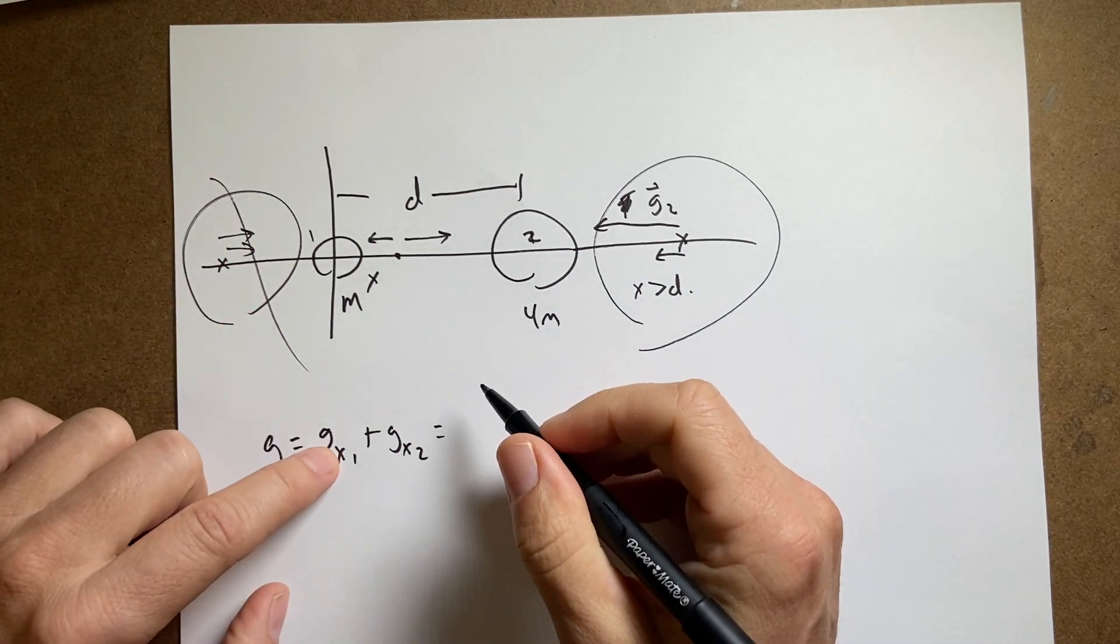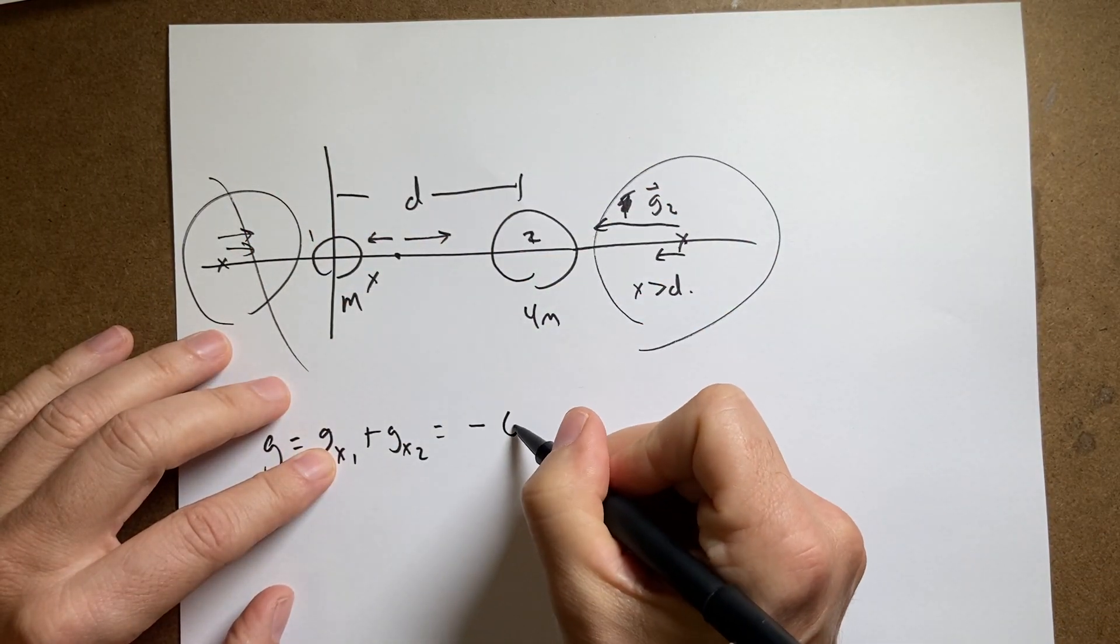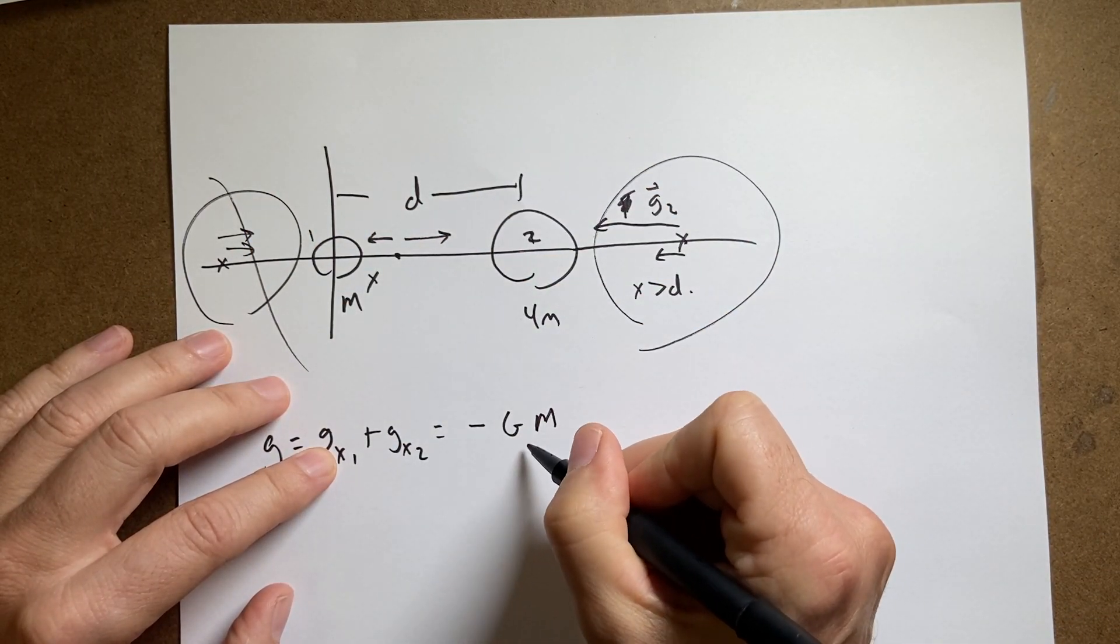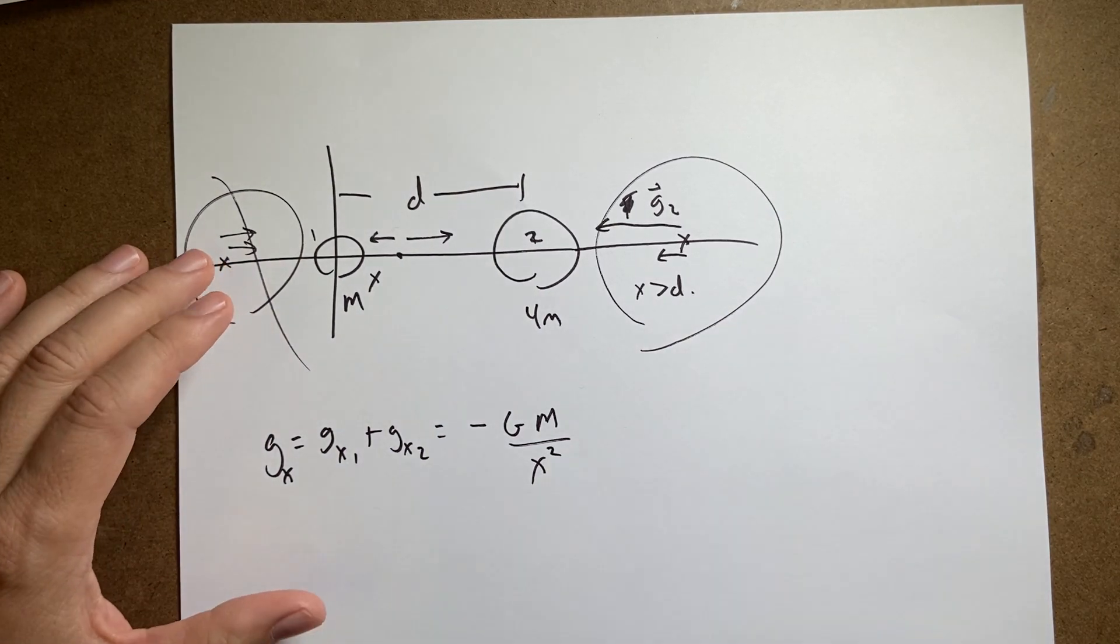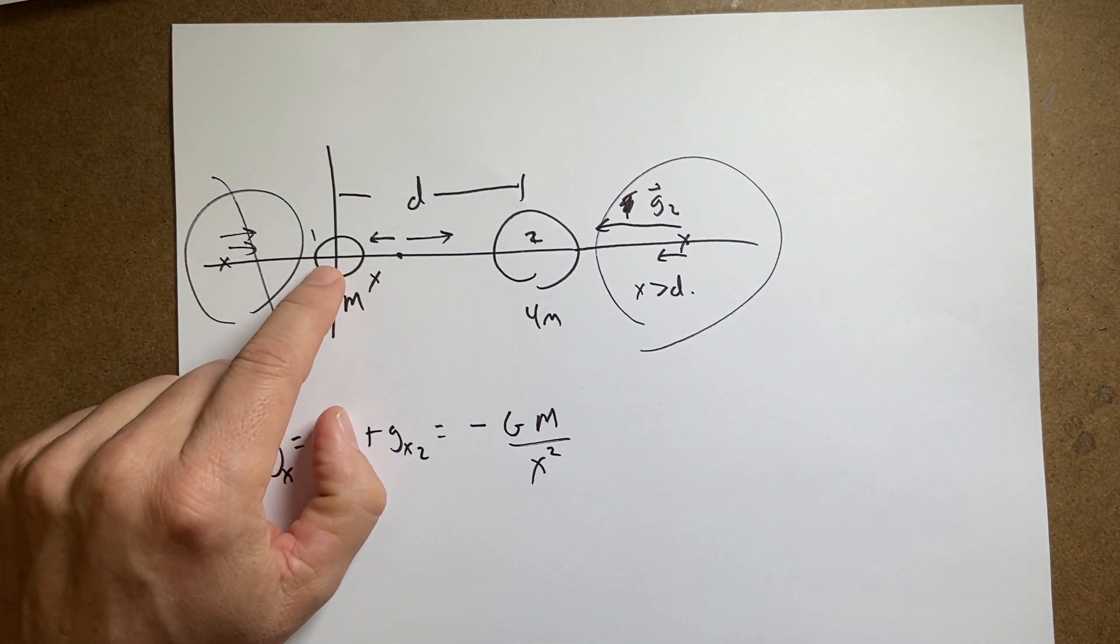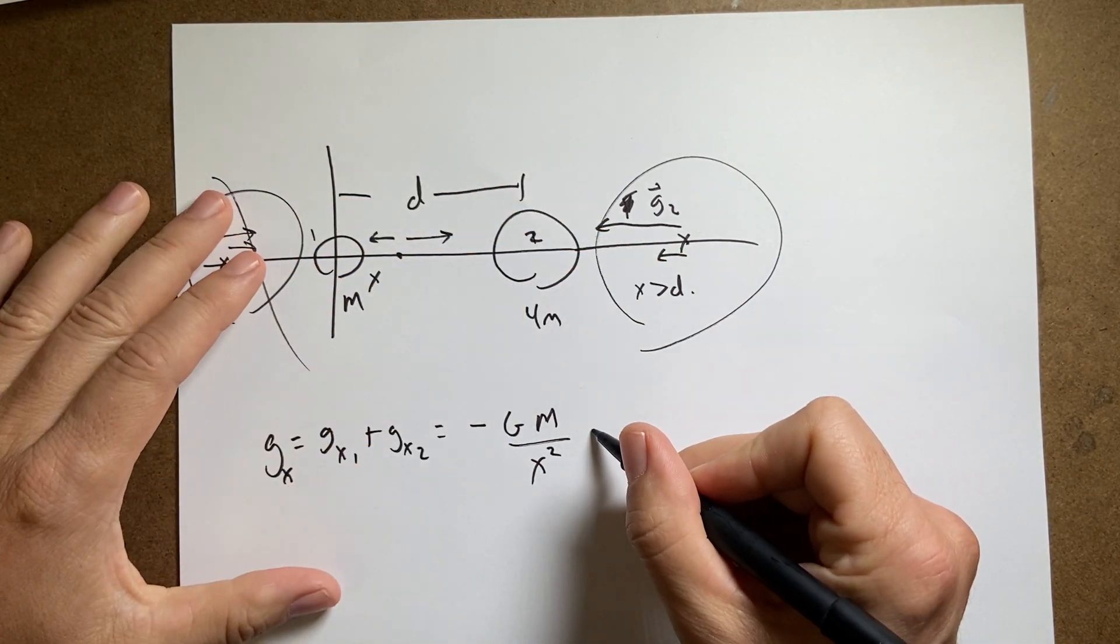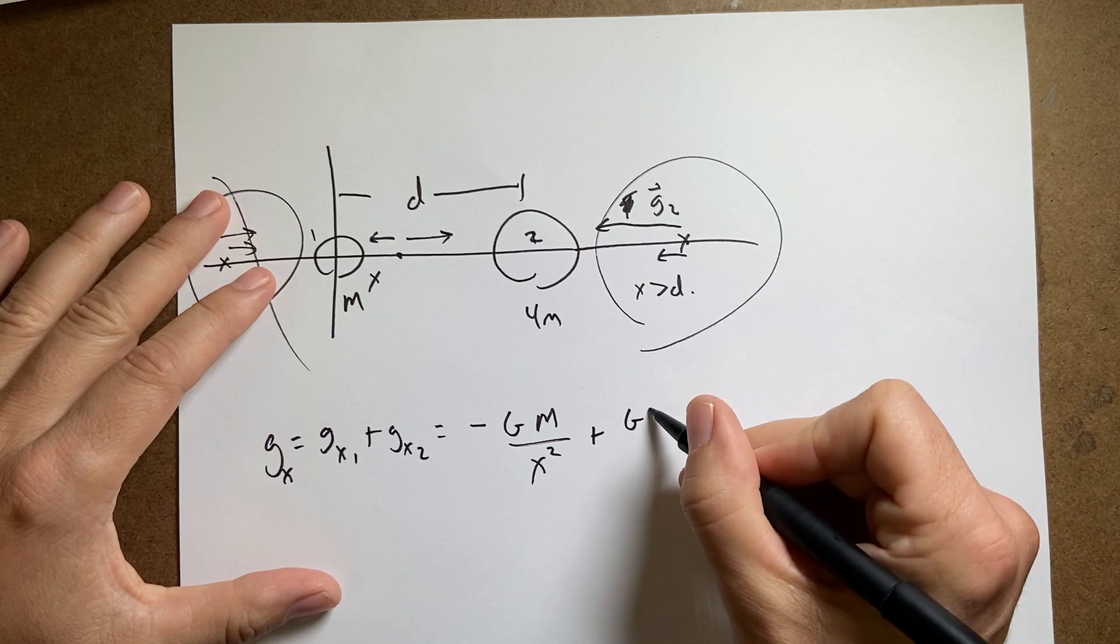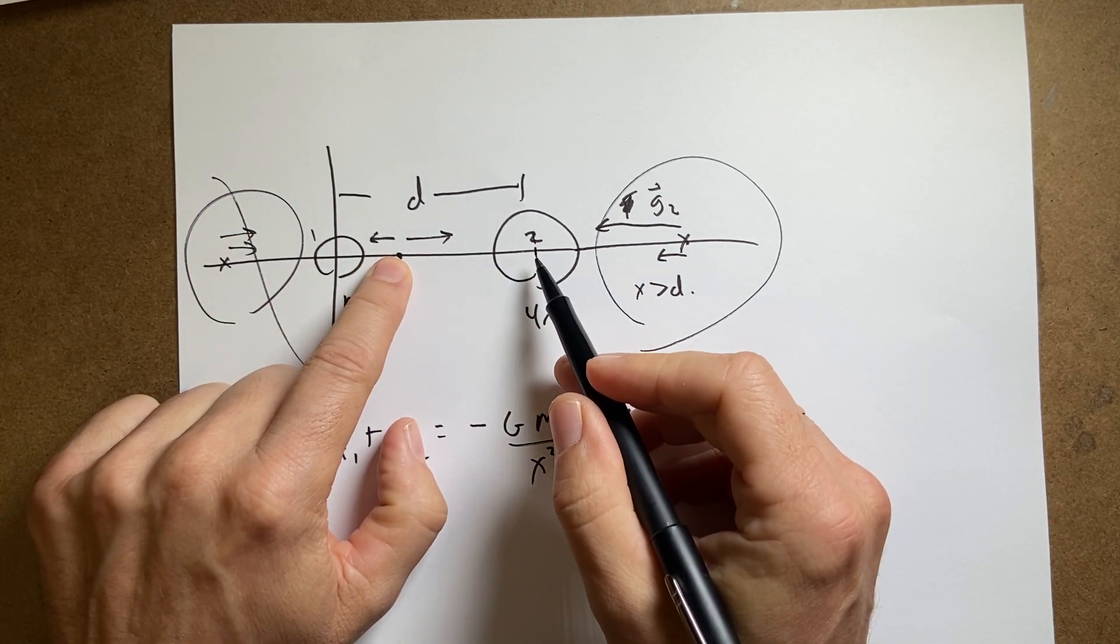So this is going to be equal to, for x1, it's going to be negative because it's in the negative x direction. Negative gm over x squared. That's the gravitational field due to mass one. This one's going to be in the positive x direction because it's pulling that way. So it's going to be plus g4m over this distance.